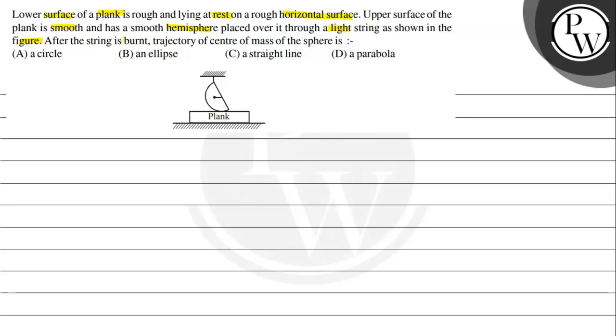After the string is burnt, trajectory of center of mass of the sphere is. The options given are A is a circle, B is an ellipse, C is a straight line, and D is a parabola.